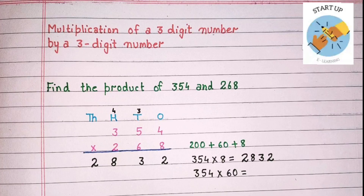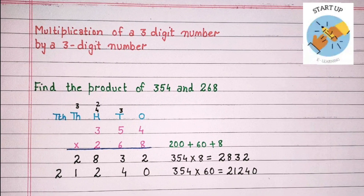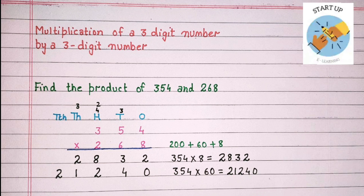Now let's multiply 354 by 60. Before starting the multiplication with the tens place, first of all we will write 0 under the ones place. Now 6 will be multiplied by 4: 6 fours are 24. 4 will be written under the tens place and 2 will be carried on to hundreds. Now 6 will be multiplied by the digit at the tens place: 6 fives are 30, plus 2 which were carried over, is equal to 32. So 2 will be written under the hundreds place.